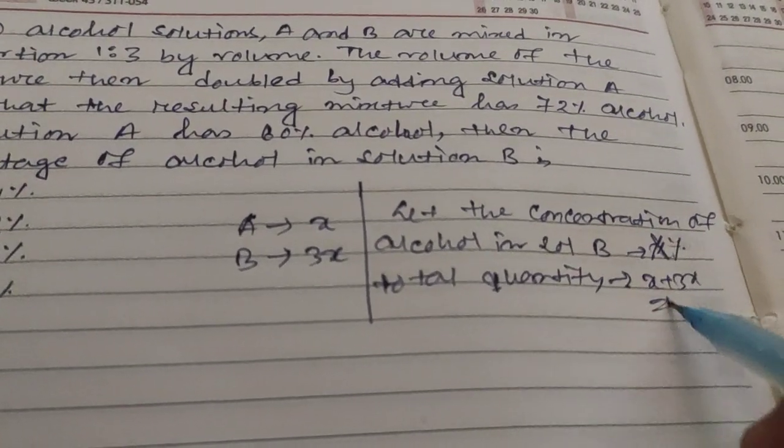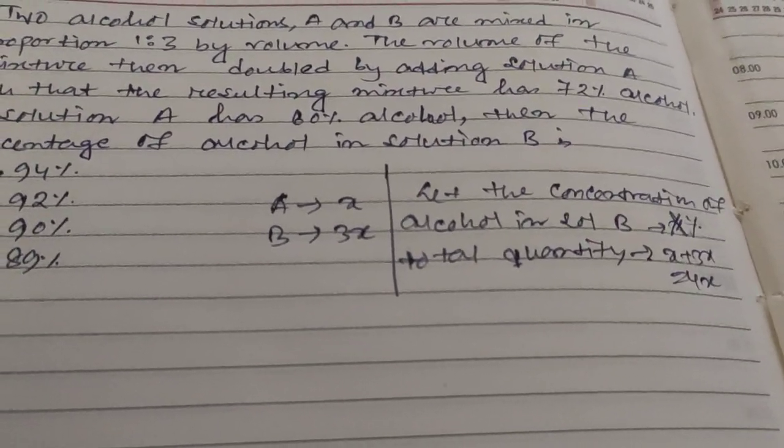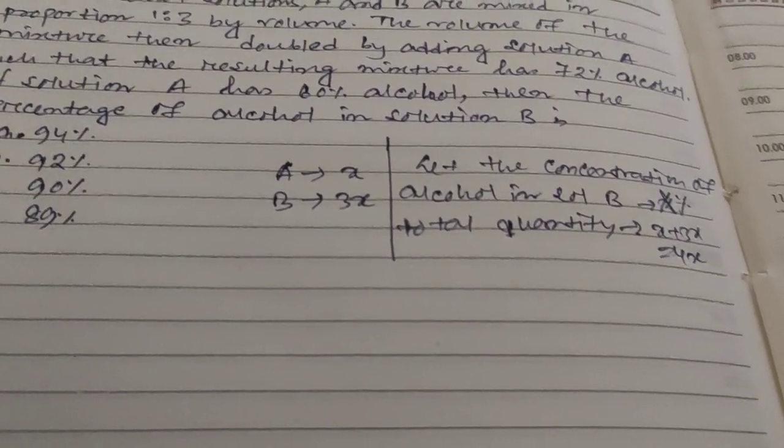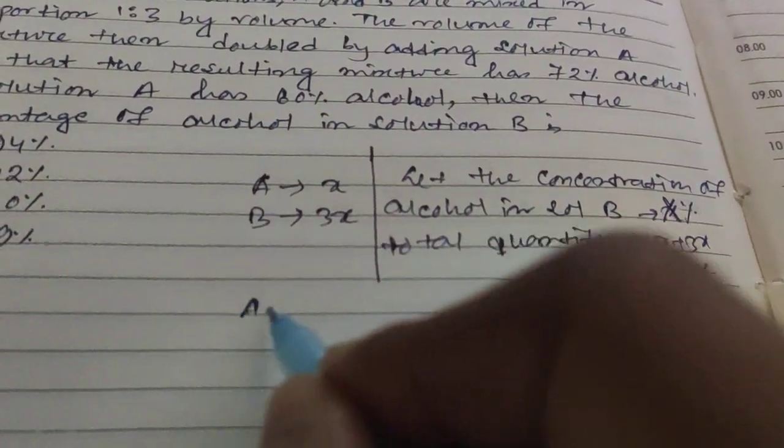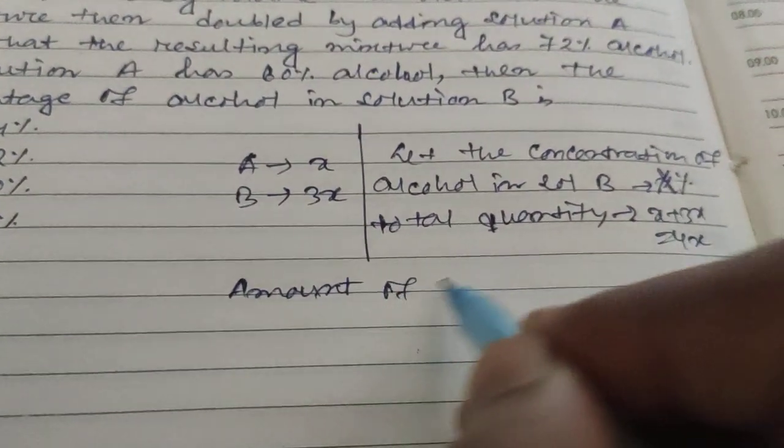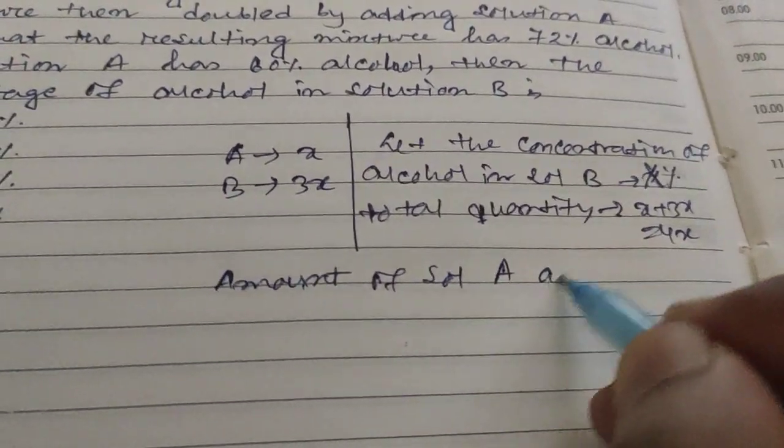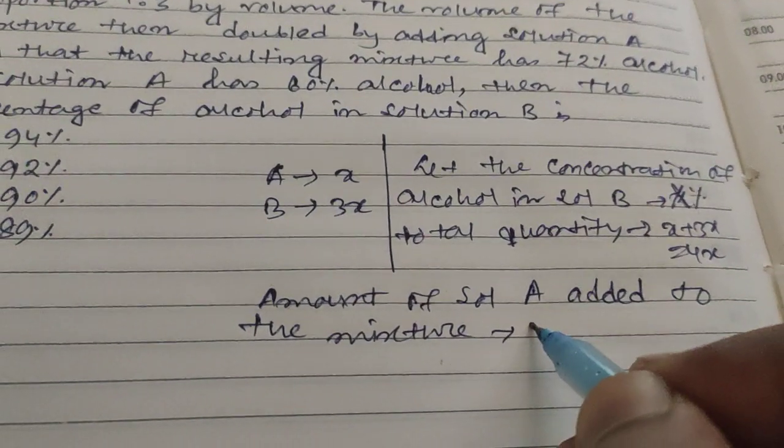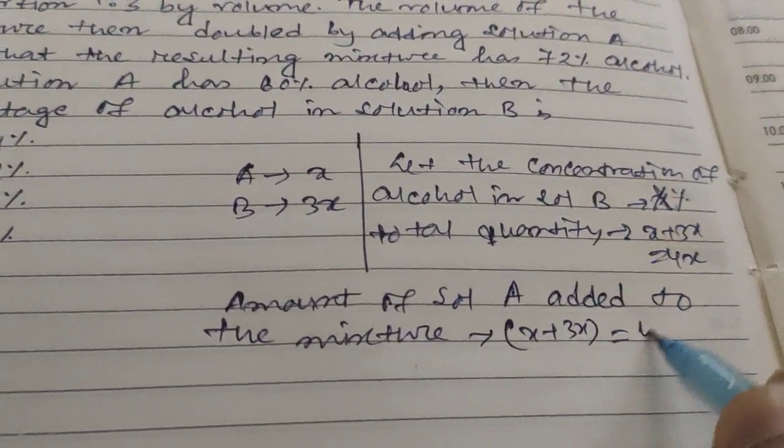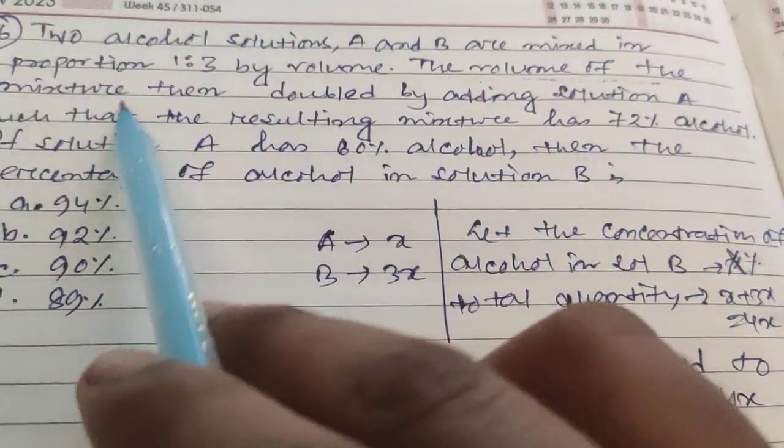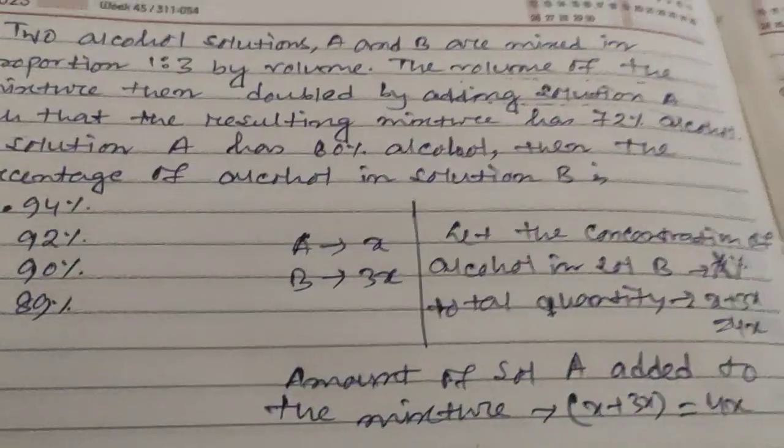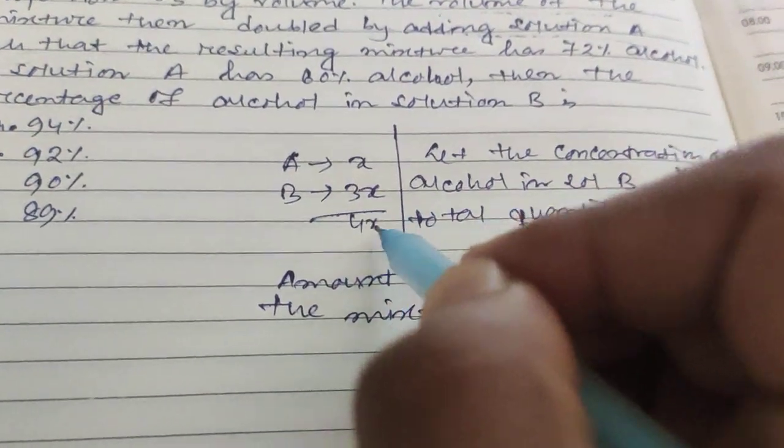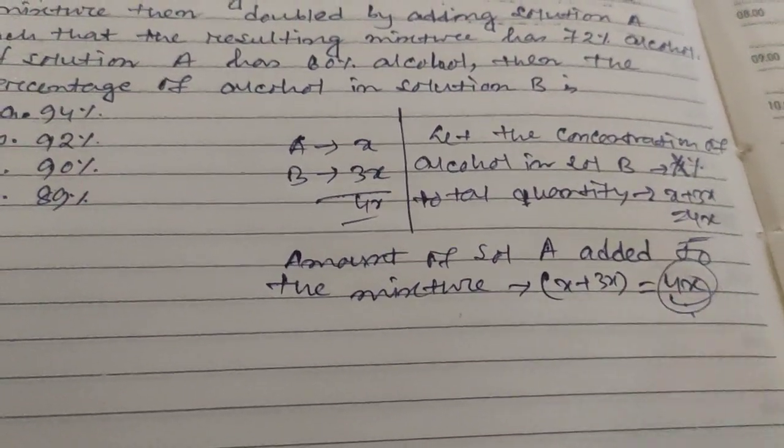Amount of solution A added to the mixture equals 4x, as the total mixture doubled by adding solution A. The previous total quantity was x plus 3x, which is 4x.